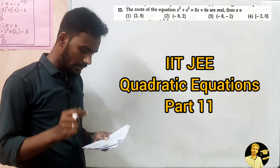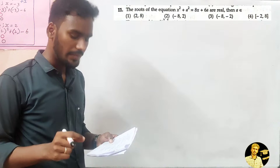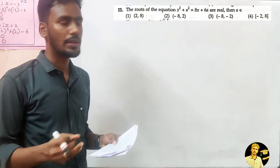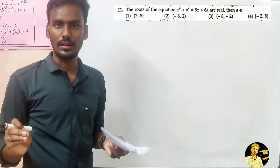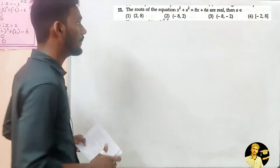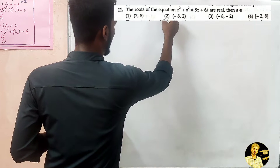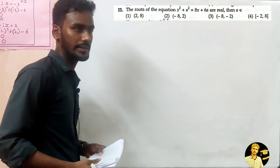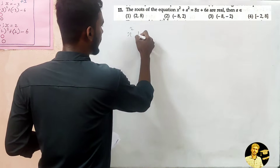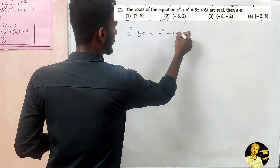The roots of the quadratic equation x² + a² = 8x + 6a are real and equal or unequal. We simplify the equation by rearranging it into standard quadratic form: x² - 8x + a² - 6a = 0.